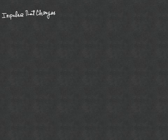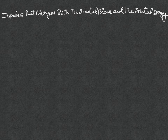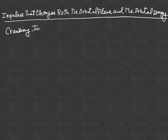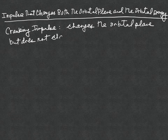Now let's start with the first part of the lecture. In this first part, we are going to develop an impulse that changes both the orbit plane and the orbital energy. Recall a cranking impulse — a cranking impulse changes the orbit plane but does not change the orbital energy.